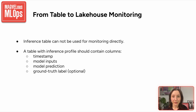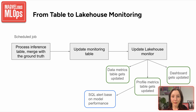It's important to note that inference tables alone cannot be used directly for monitoring — they simply log raw inputs and predictions from the serving endpoint. To enable actual monitoring, such as tracking drift or performance, you need to process this data into a structured format known as an inference profile table. An inference profile table would typically include a timestamp for when the request was made, the input features, the model's prediction, and optionally the ground-truth label for comparison. Once this table is created, you can use tools like Lakehouse Monitoring to generate dashboards, track model quality metrics, and detect issues over time. Ideally, you should set up an automated job that processes the raw inference table into a structured monitoring table, which is then used to update or generate a metrics table and automatically update the dashboard. You can also configure alerts so you are notified when performance drops or data shifts, helping you take quick action like retraining or redeploying the model.